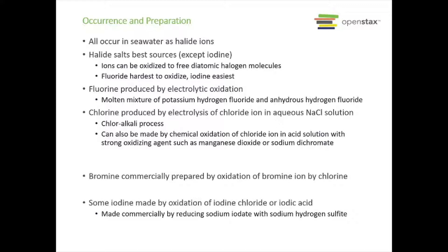Chlorine is produced by the electrolysis of the chloride ion in an aqueous sodium chloride solution — what we called the chloralkali process. There's another reaction to make chlorine: chemical oxidation of the chloride ion in an acid solution with a strong oxidizing agent such as manganese dioxide or sodium dichromate. We're going to look at the reaction with manganese in just a second.